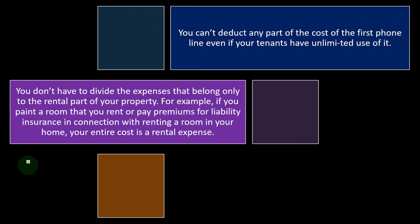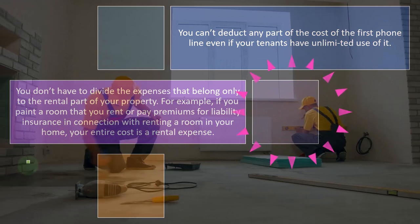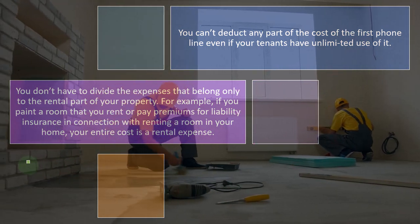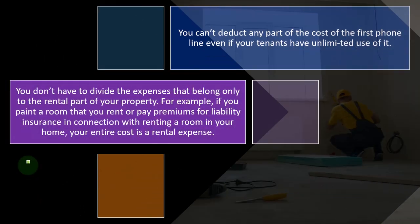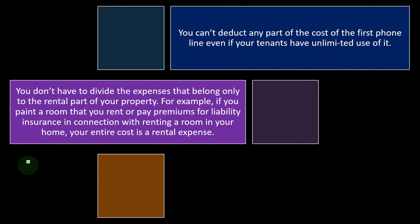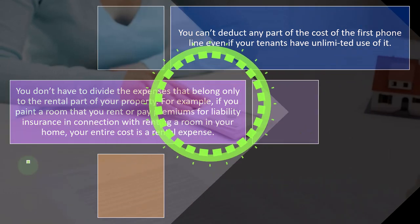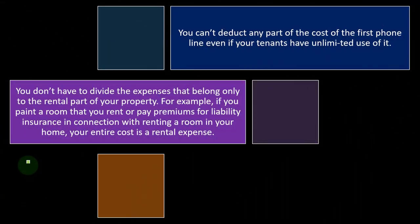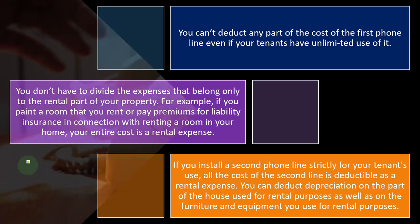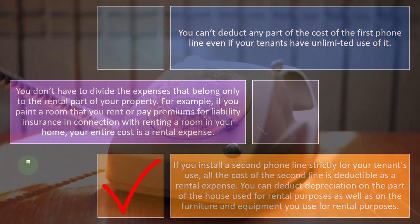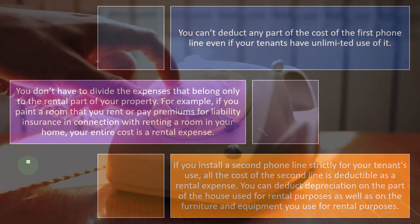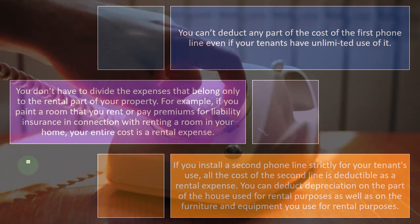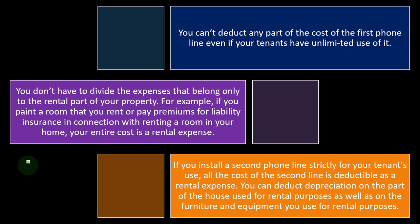In other words, if you rent part of a home and paint the entire outside of the house, you'll need to divide that painting cost between rental and personal. But if you paint only the inside of the rented portion, then the whole cost is for the rental portion and fully deductible. The problem occurs with costs for the whole structure that must be allocated between personal and business use. If you install a second phone line strictly for your tenant's use, all the cost of the second line is deductible as a rental expense. You can also deduct depreciation on the part of the house used for rental purposes, as well as on the furniture and equipment used for rental purposes.